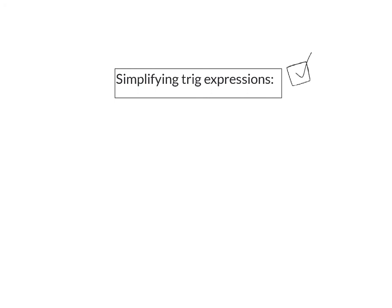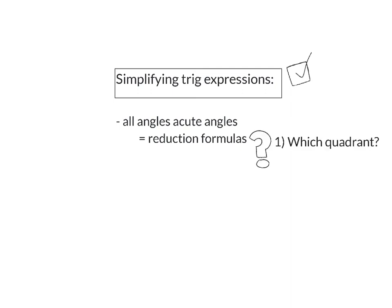To summarize: when simplifying trig expressions, your first aim is to get all angles as acute angles using reduction formulas. Always ask yourself which quadrant you're in and what sign the trig function has there. After that, apply your identities — both the grade 11 ones and the new grade 12 compound and double angle identities — to simplify fully.